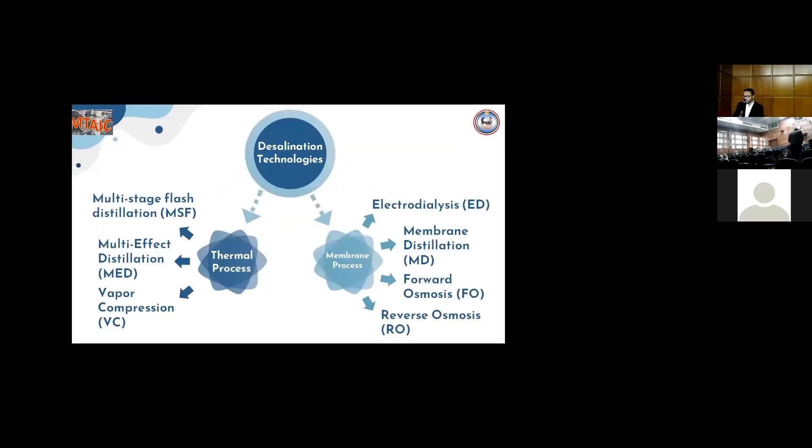The literature review: the desalination process includes two processes, thermal and membrane. The thermal process includes multi-stage flash distillation, multi-effect distillation, vapor compression, and in the membrane process, such as reverse osmosis, membrane distillation, forward osmosis, and electrodialysis.